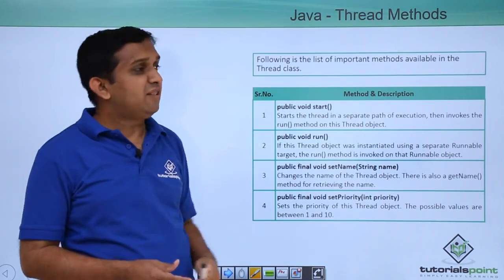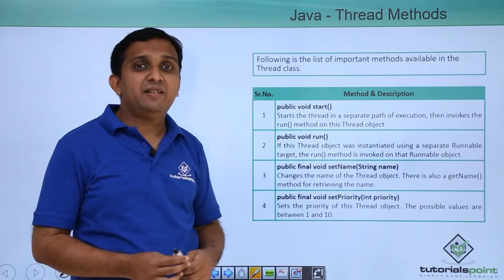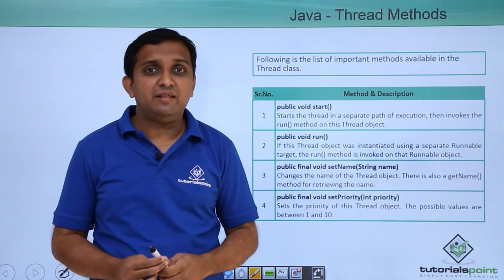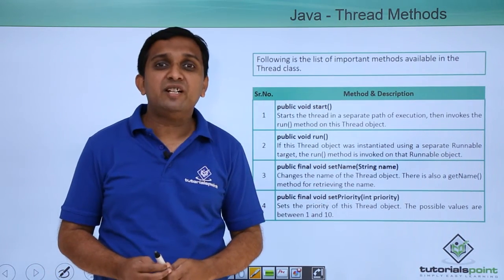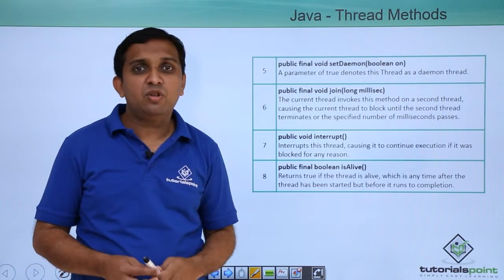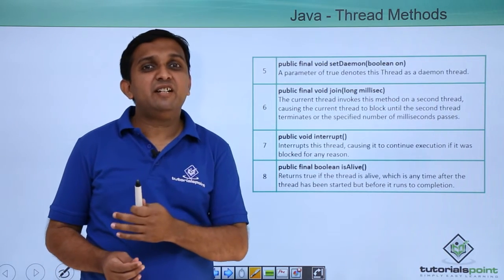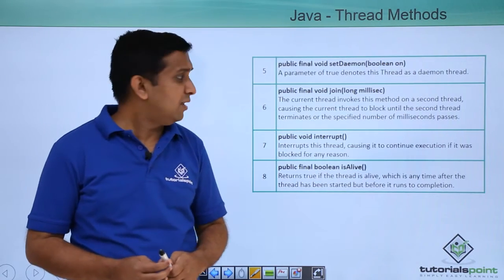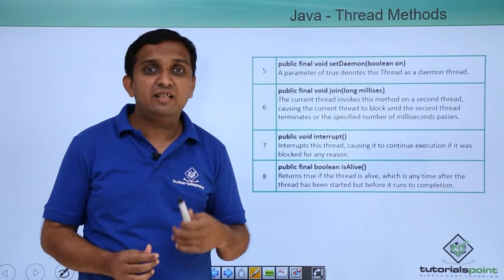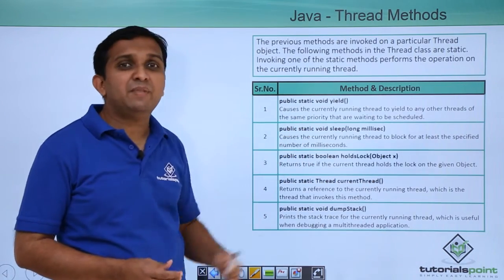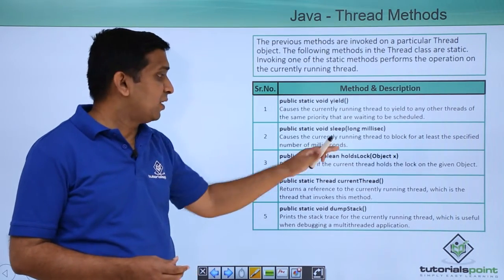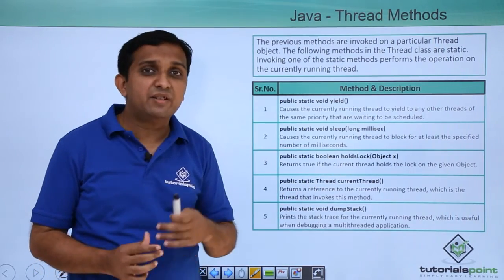Some methods of the Thread class: start() is used to start the thread. run() contains the task the thread is actually executing — the code for the thread is inside the run method. setName() sets the name of the thread, setPriority() sets the priority between 1 to 10. setDaemon() takes a Boolean argument true or false. join() makes other threads stop execution until the current thread's execution is complete. interrupt() starts threads that are blocked. isAlive() tells you which thread is currently running. yield() and sleep() are also there — sleep() takes milliseconds as argument and makes the thread stop execution for that many milliseconds. holdLock() and currentThread() are also available — currentThread() returns the reference of the currently executing thread.